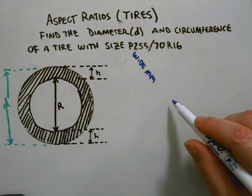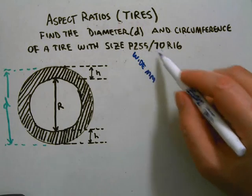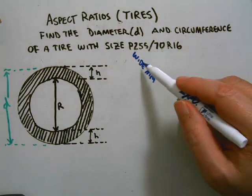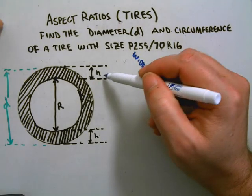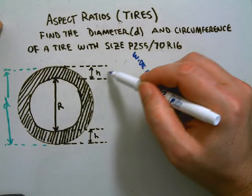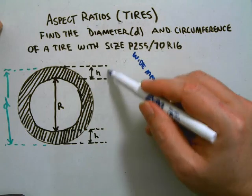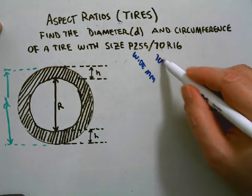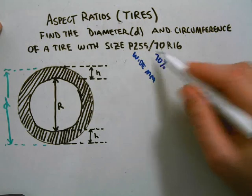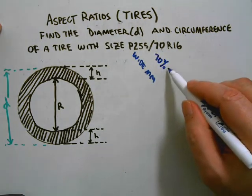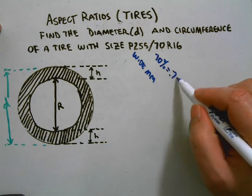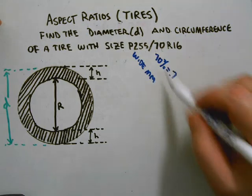Right after the slash, that's the aspect ratio as your width to height of the tire, which is right here. It's really 70 percent of whatever the width is, and we generally change that to 0.7 as a decimal in order to multiply.